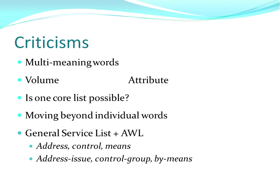Another criticism is that we should look beyond individual words — moving to collocations. At a collocation level, it also changes the meaning and use of some words. Words like 'address,' 'control,' and 'means' are not on the Academic Word List because they're in the first 2,000. However, when you look at them at a collocation level, their use is probably not the most frequent use — 'address an issue' rather than the place where you live, 'control group' as a common academic collocation, and 'by means' meaning the way in which you do something.